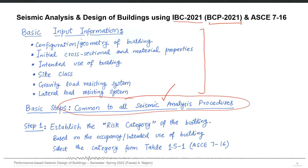The basic input information — some of it will come from the geotechnical investigation report, such as site class, and some is related to the conception of your building. The architect will have his own role in that, along with the structural systems: the gravity load resisting system and the lateral load resisting systems. Once we have all that basic information, we can start this process of selecting the seismic analysis procedure. The first step is the selection of the risk category of the building.